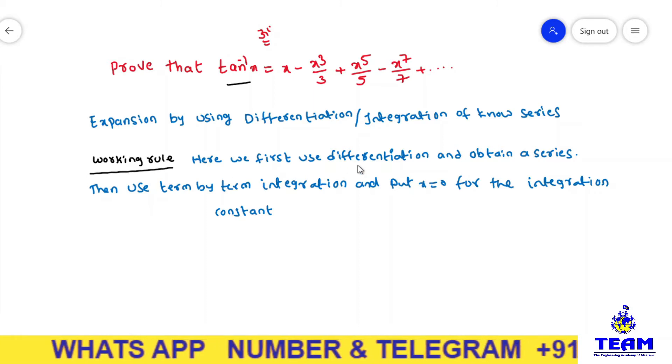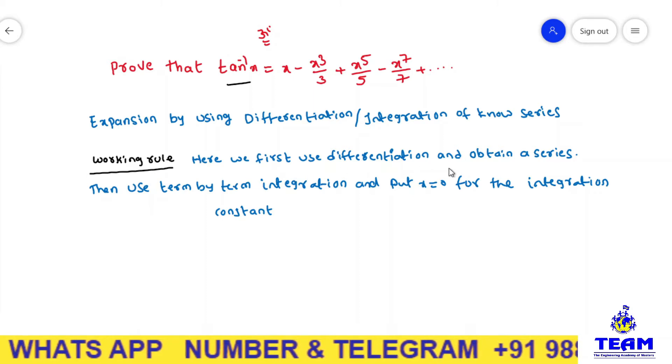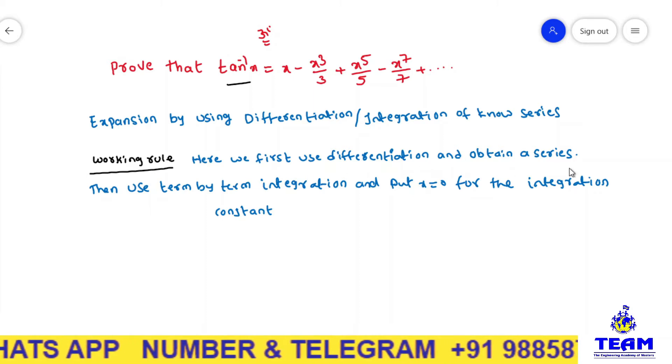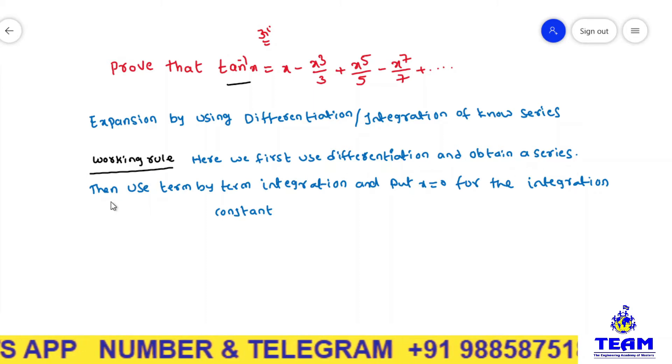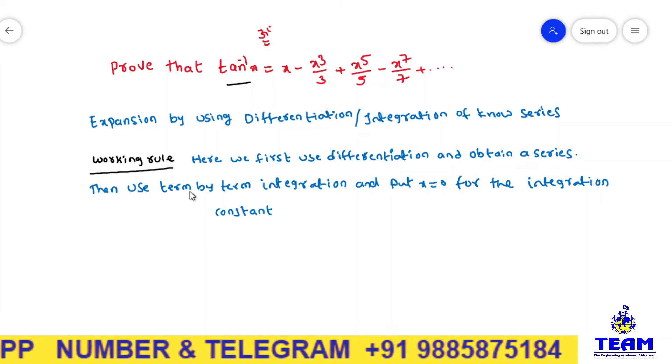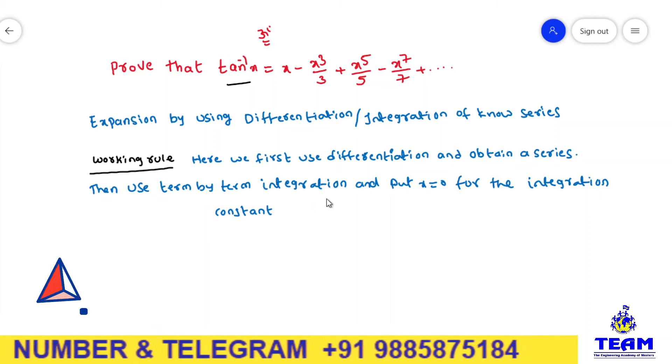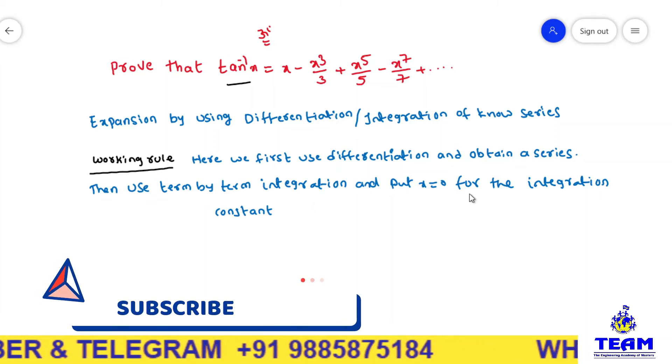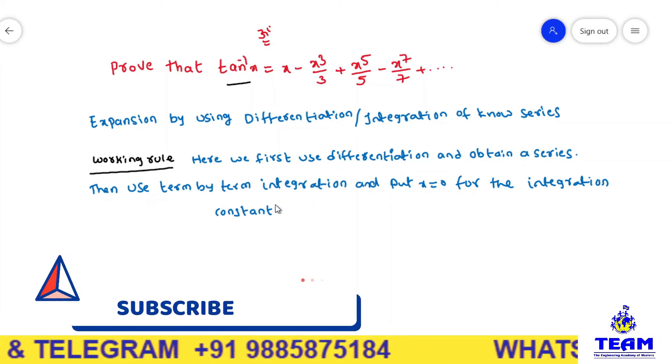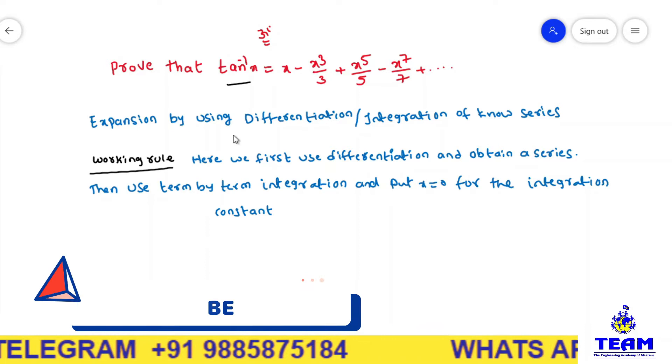Here is the working rule. We first use differentiation and obtain a series. Then, use term-by-term integration and put x equal to 0 to find the integration constant.